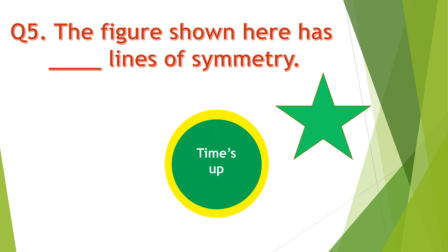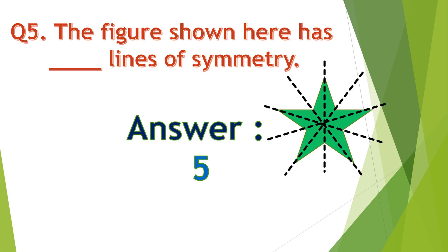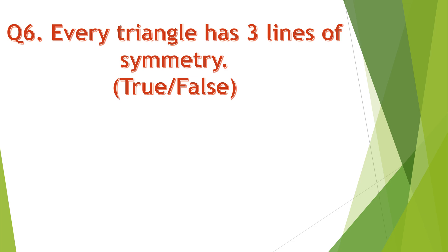Your time is up. And the right answer is 5. The figure shown here has 5 lines of symmetry. Question number 6. Every triangle has 3 lines of symmetry. True or false?